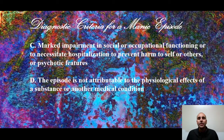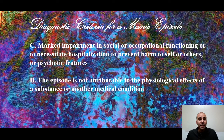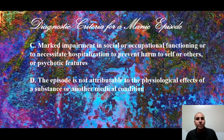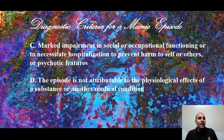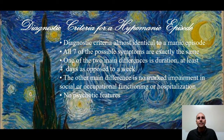The episode must not be attributable to the physiological effects of a substance, substance-induced mania, or another medical condition. Medical conditions such as tumors in the limbic system, frontal lobe, or temporal lobe, or frontotemporal neurocognitive disorder — involving shrinkage of both lobes — can create a manic episode. Substances include cocaine, methamphetamine, pharmaceutical stimulants like Dexedrine or Ritalin, steroids, antidepressants, and L-dopa, a Parkinson's medication. The crucial distinction between mania and hypomania is duration and severity.